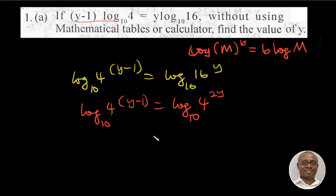Good. So now this will equate each other. So we have y minus 1 equals 2y. And if we now collect the like terms...